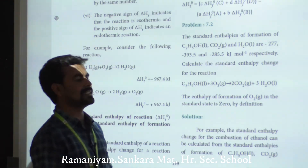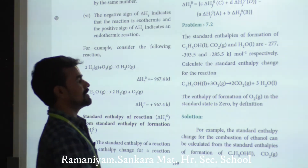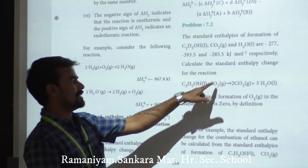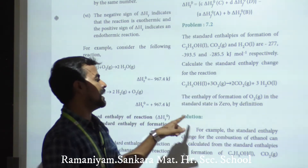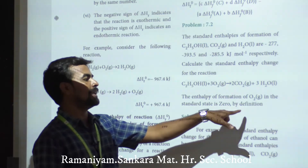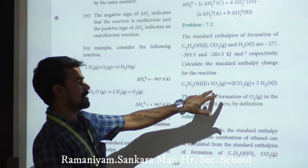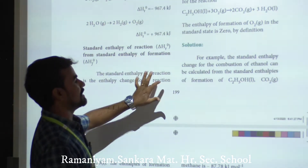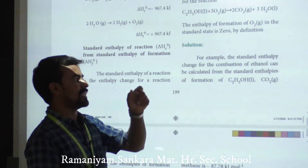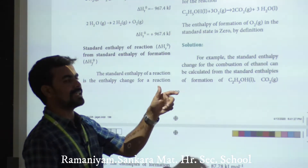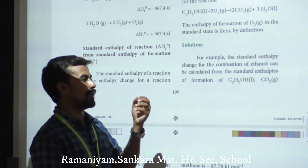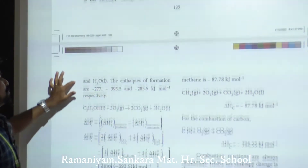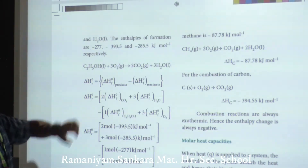Which is the product side and which is the reactant side? The product side is 2CO₂ + 3H₂O, and the reactant side is C₂H₅OH + 3O₂. Note that for O₂ in its standard state, the standard enthalpy of formation is zero.